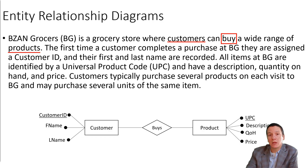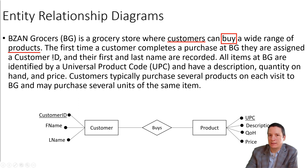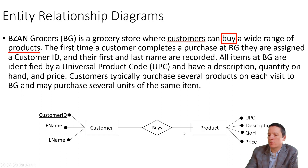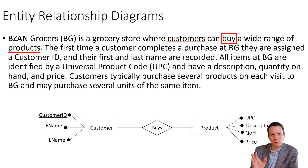We have some additional structural constraints around the participation and cardinality of these entities in our relationship. Looking at participation, the story says the first time a customer completes a purchase at BG, they are assigned a customer ID. So it sounds like we probably couldn't have any customers — no one would be considered a customer before they've completed a purchase. So I'm going to say customer has mandatory participation in this relationship, which we represent by this line here across the relationship, meaning a customer buys a minimum of one product. And knowing what I know about grocery stores, I'm going to say there is the chance that a product might not ever be purchased — like when we first get a new product in, maybe no one has bought it yet. So product has optional participation in this relationship.